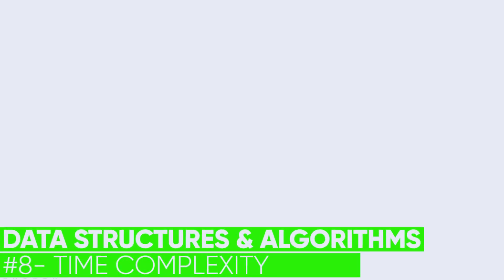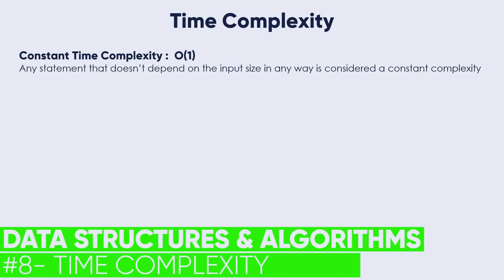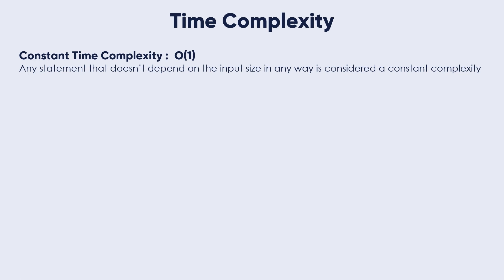There are some general rules to help us determine the running time of an algorithm. We'll start with constant time complexity. Any statement that does not depend on the input size in any way is considered a constant complexity, O of 1.